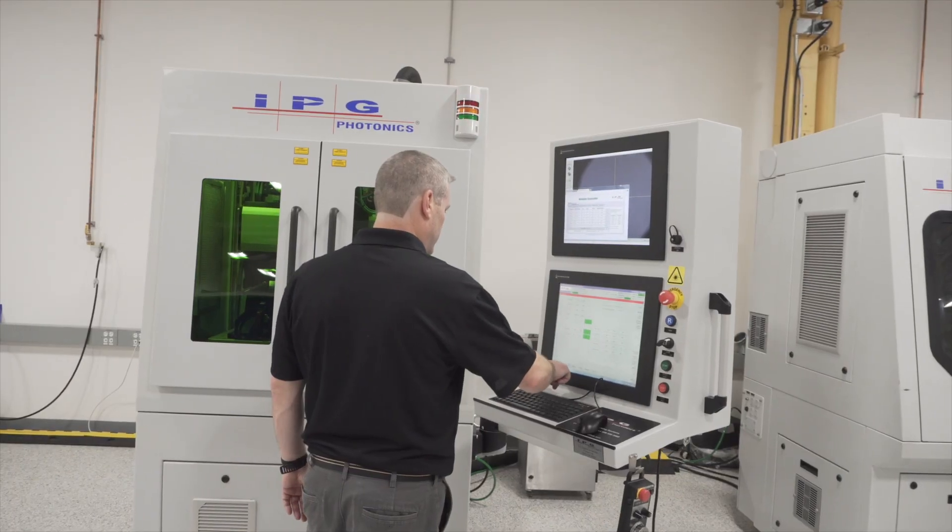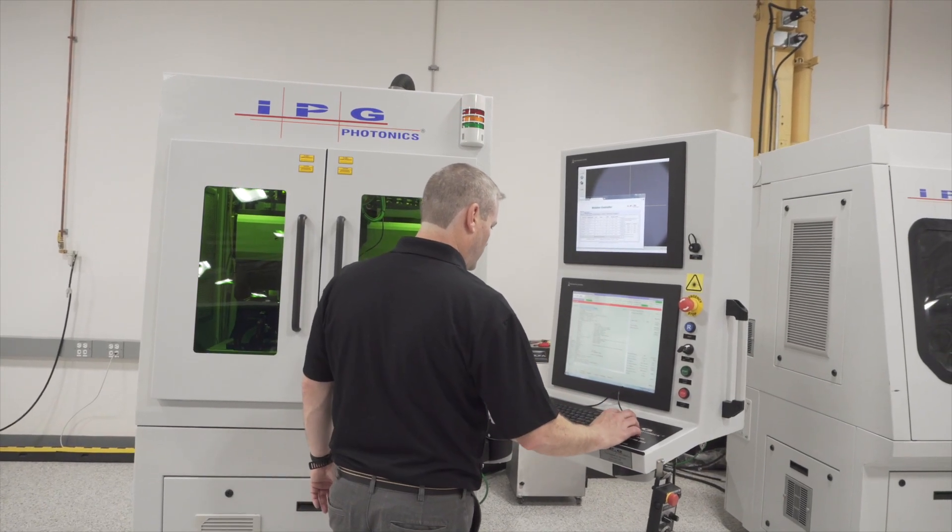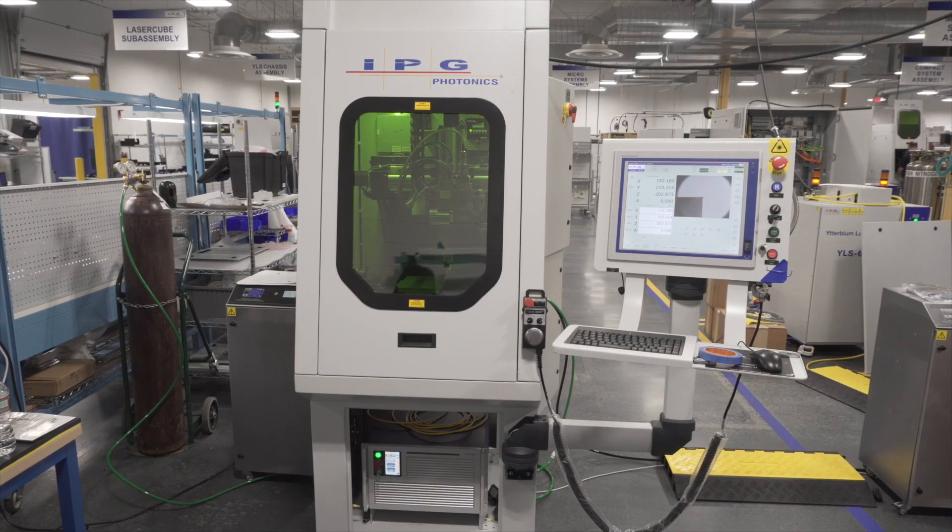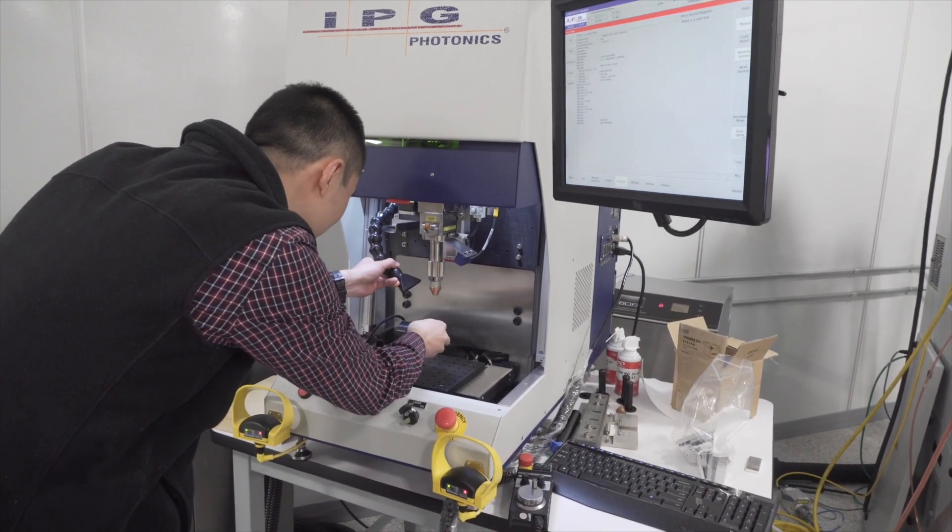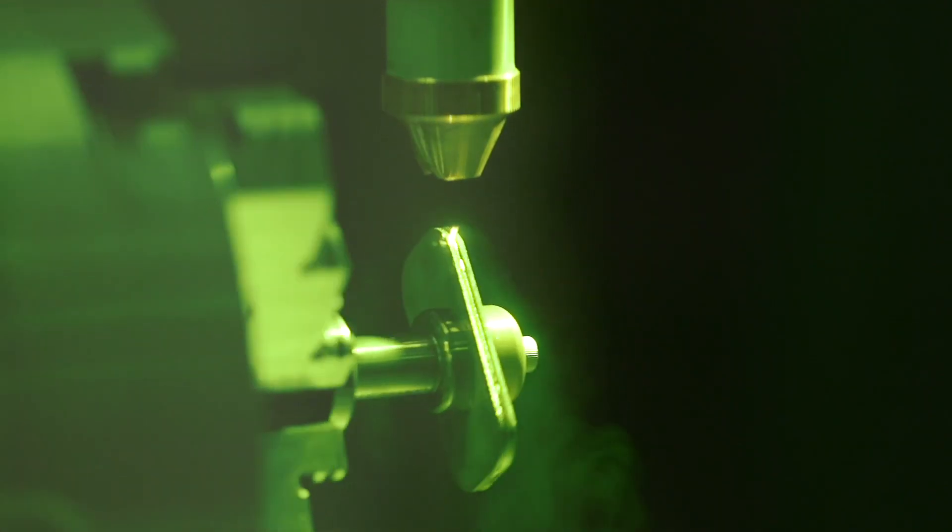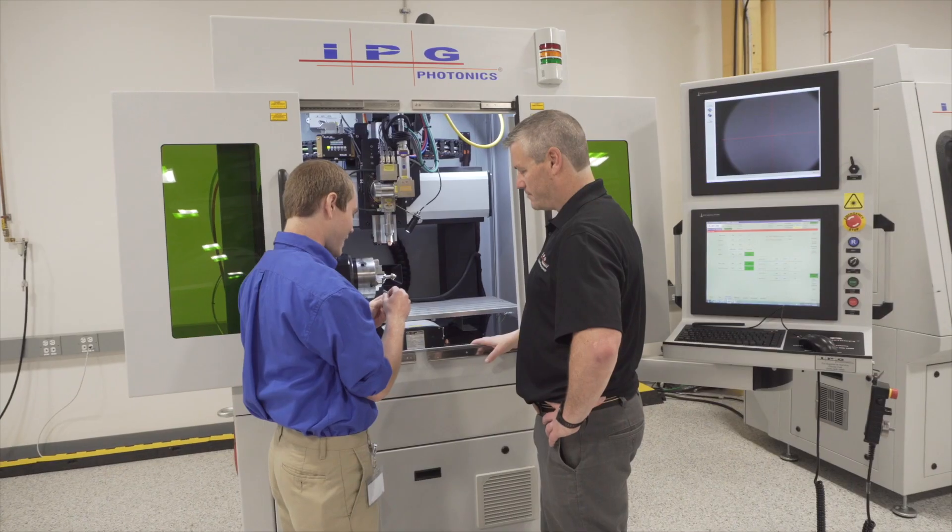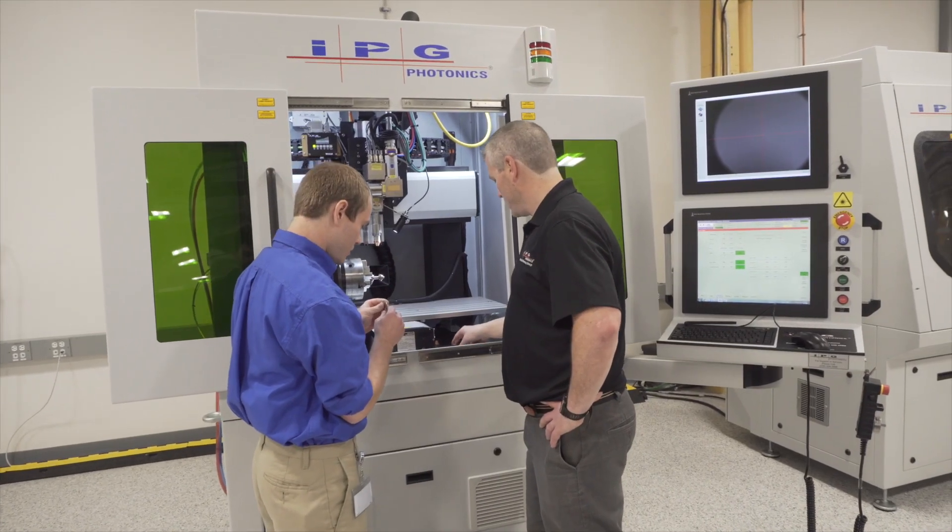There are three types of multi-axis machines that we offer at IPG: the standard size multi-axis, the compact multi-axis, and the micro multi-axis. All three platforms are capable of being fitted with the IPG wobble welding head, which provides enhanced ability to solve typical challenges that arise with laser welding.